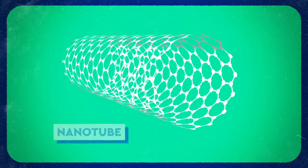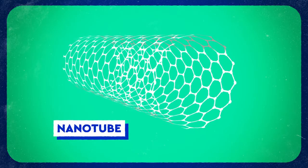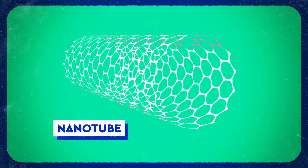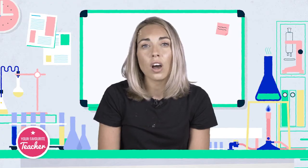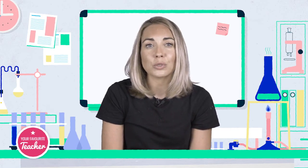Nanotubes are formed from graphene sheets and they roll into a cylinder shape. They have a hollow centre and can be very long and therefore have a high length to diameter ratio. They're used in electronics, nanotechnology and manufacturing materials with distinct properties.